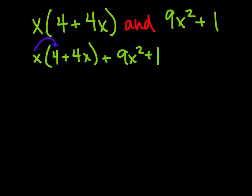Let's do the distributive property so we can get rid of those parentheses and make this slightly simpler. x times 4 equals 4x.